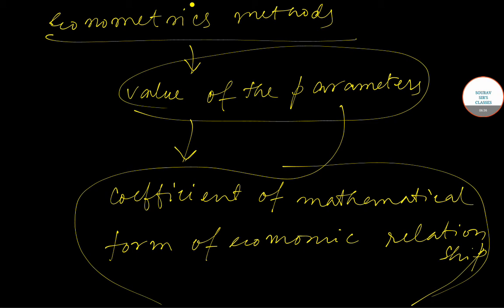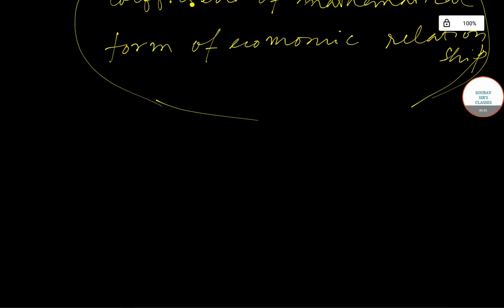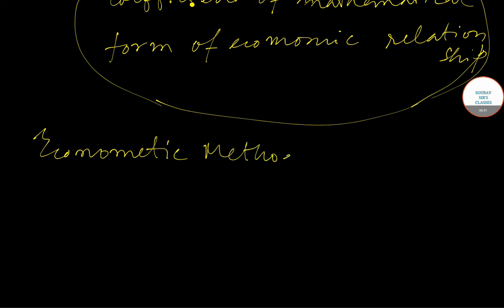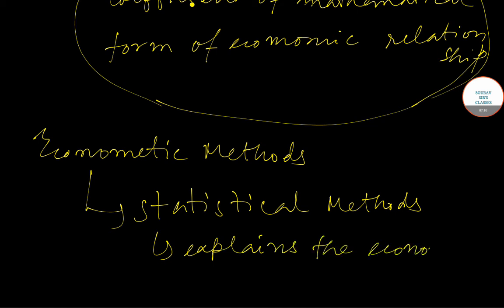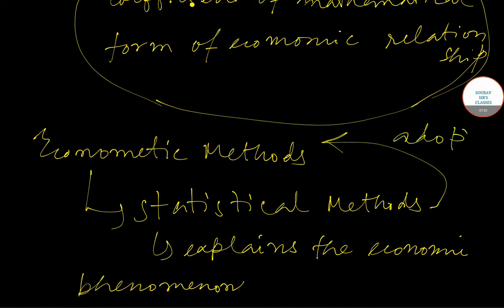The statistical methods which help in explaining the economic phenomenon are adapted as econometric methods. Econometric methods are those statistical methods which help in explaining the economic phenomenon, and these statistical methods are adopted as econometric methods.